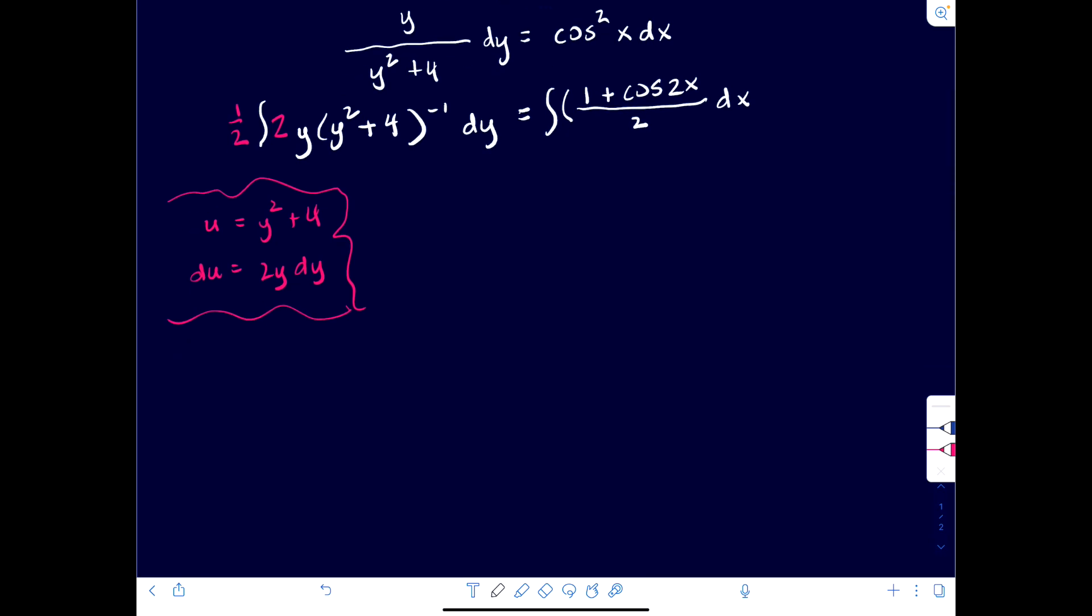you end up getting 1 plus cosine of 2x over 2 dx. Now, continuing, we will have, so I'm going to complete the integration on that left-hand side. And so I'm integrating something to the negative 1. The 2y dy is the price of admission. So this is the same as doing u to the negative 1 and doing that integral. And so that's going to be natural log, absolute value of my u, but that u is y squared plus 4.